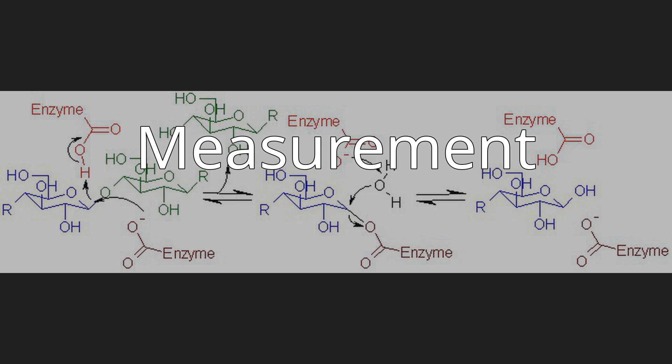A viscometer can be used to measure the decrease in viscosity of a solution containing a water-soluble cellulose derivative such as carboxymethyl cellulose upon incubation with a cellulase sample. The decrease in viscosity is directly proportional to the cellulase activity. All such assays are very sensitive and specific for endocellulase; exo-acting cellulase enzymes produce little or no change in viscosity. They are limited by the fact that it is hard to define activity in conventional enzyme units of micromoles of substrate hydrolyzed or product produced per minute.